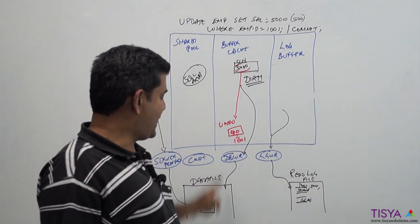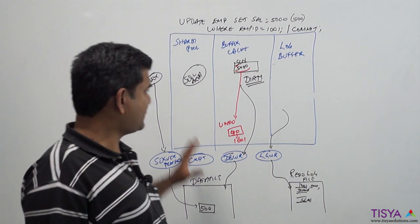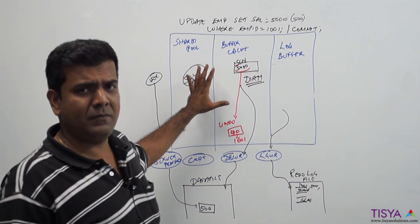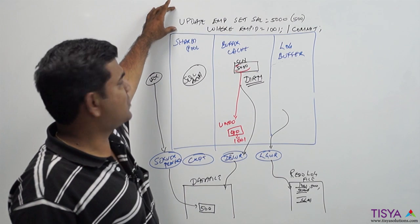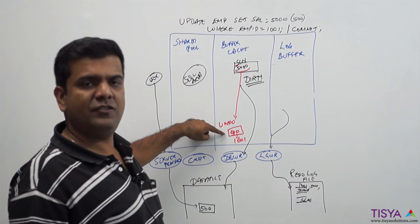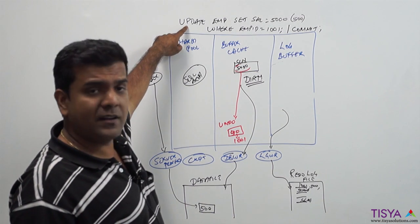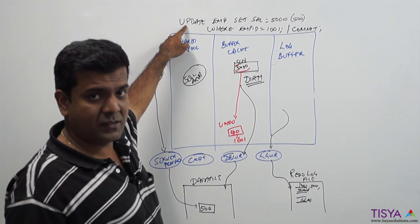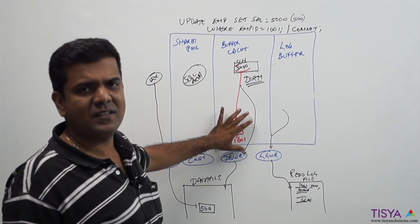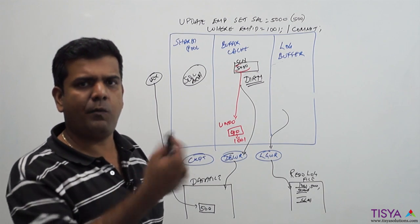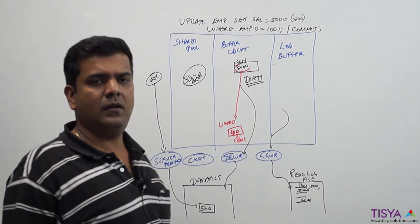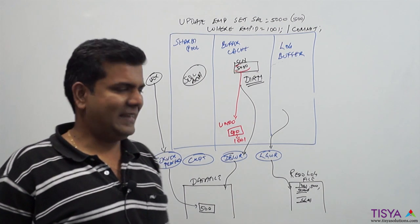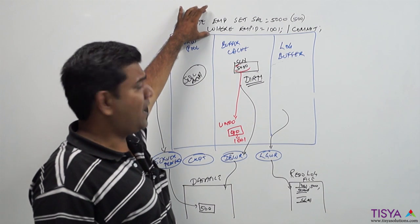So that's a quick look at how a DML statement gets processed. In case of an update there was undo value generated. In case of a delete also, undo value would have been generated. In case it was an insert, there would be no necessity of major undo - just a pointer to the row where the new row was inserted would have been kept.